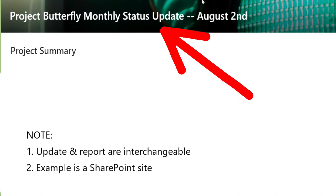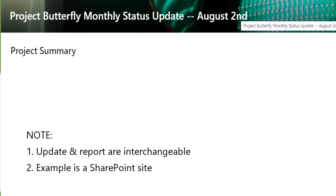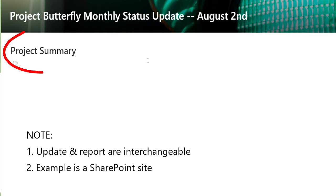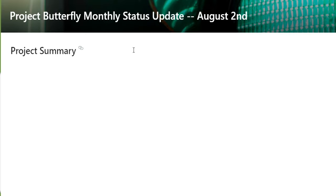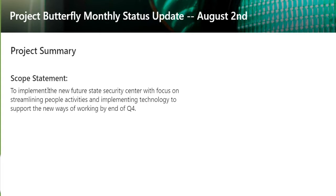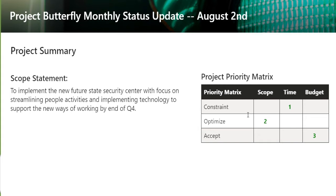Here we have the title of our update — it's a monthly update, and here's the date it was updated, which was the second. Your first section in any update is always a project summary. You want to include information to remind all those stakeholders what it is we're doing. What goes in the project summary? The scope statement — what you're responsible for from a delivery standpoint. For this particular project, we're implementing a new future-state security center, focused on streamlining people activities and implementing technology to support new ways of working. We also include the project priority matrix, which lets people know your constraints and what you're willing to optimize from a scope, time, and budget perspective.